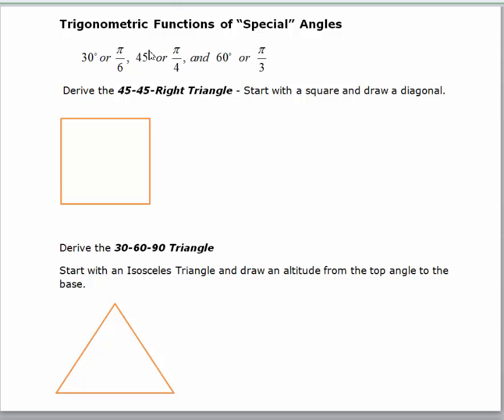There are a few different ways to help you memorize the trig functions of special angles. If you're not a good memorizer, sometimes deriving where they came from helps you get a better understanding. So let's start by deriving the six trig functions of 45 degrees, and we can do that using a square.